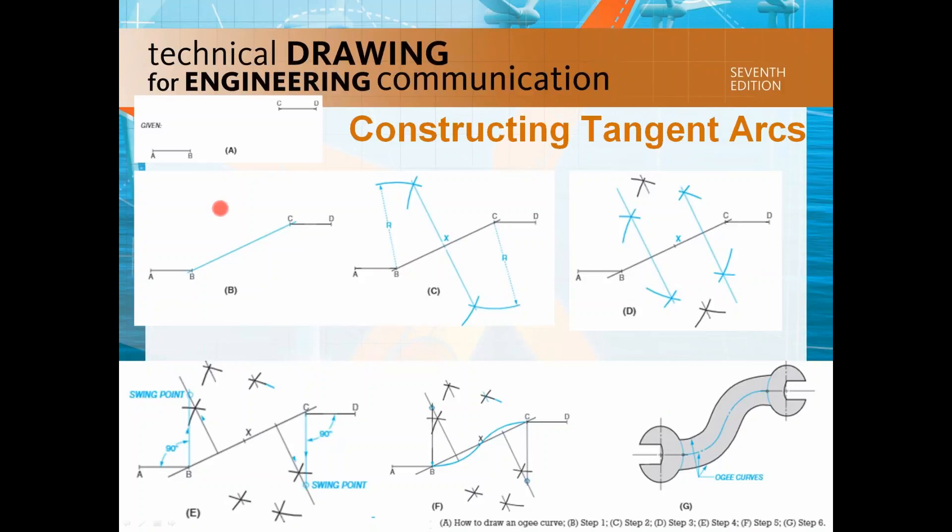As you can see from this presentation slide, line AB and line CD are given and now we have to learn how to draw an OG curve. An OG curve is used to join two parallel lines. It forms a general curve that reverses itself in a neat symmetrical geometric form.